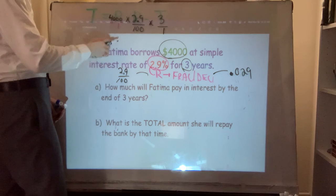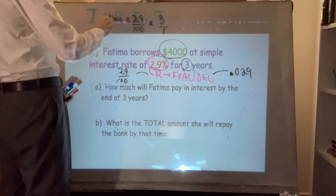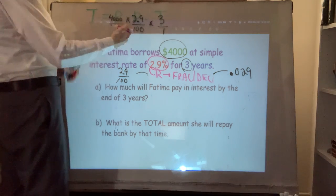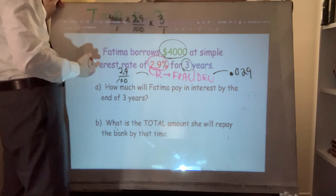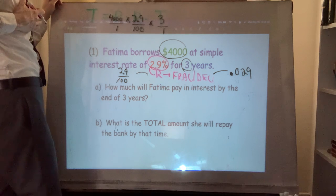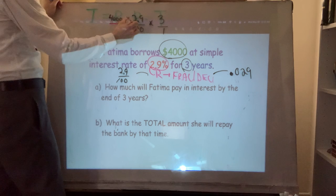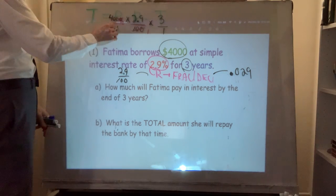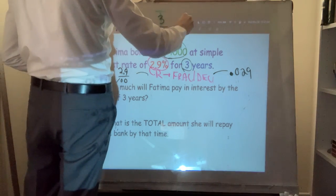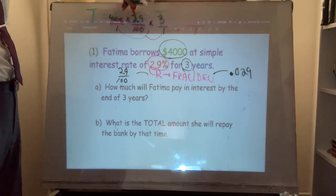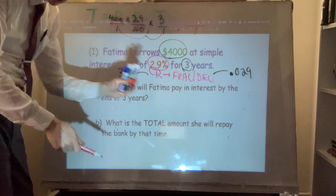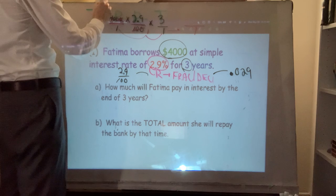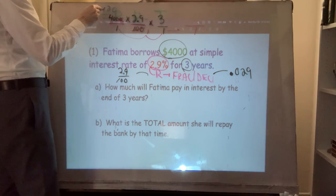Since it's just multiplication you can strategically multiply in any order you're comfortable with. For example: 3 times 40 is 120. Then you would just have to multiply 120 times 2.9. Brute force: 0 times 9 is 0, 2 times 9 is 18, carry the 1, 9 times 1 plus 1 is 10. Placeholder. Then the second partial product. One decimal place to move over — the value of how much money Fatima should pay in interest by the end of three years would be $348.